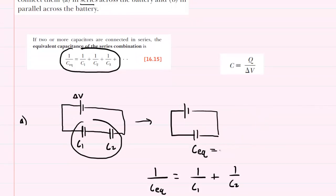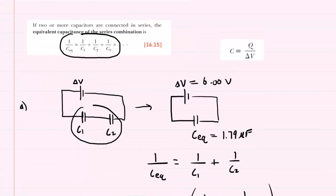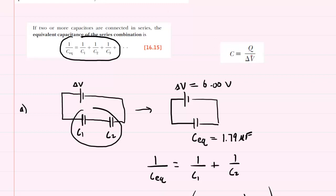So we already know that the equivalent capacitance is 1.79 microfarads. We just determined that. And we know that the potential difference supplied by the battery is given in the question, and that was 6 volts. So we can fill in 6 volts right here. This equation shows us that we can easily calculate the charge Q on this equivalent capacitance.